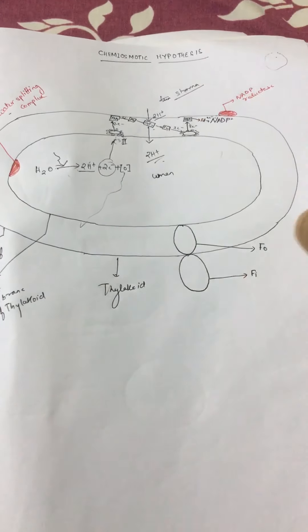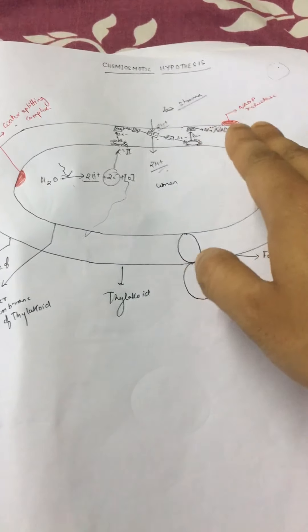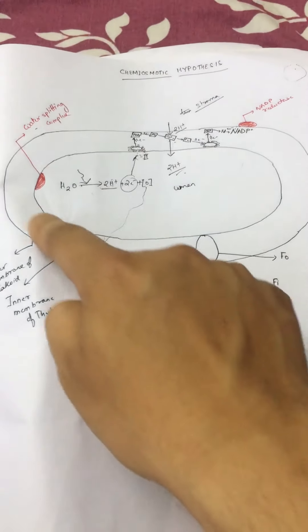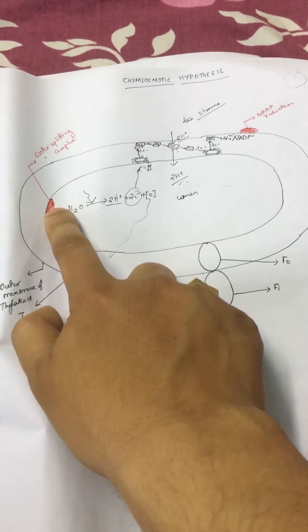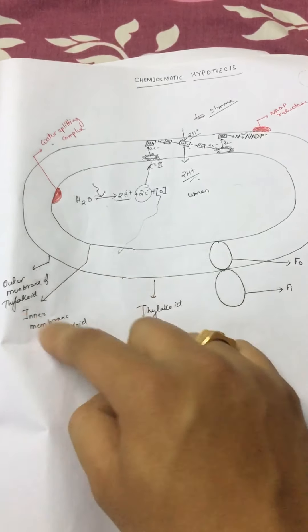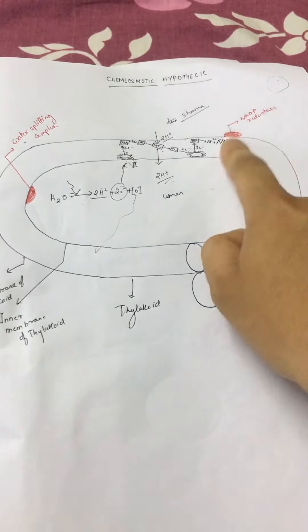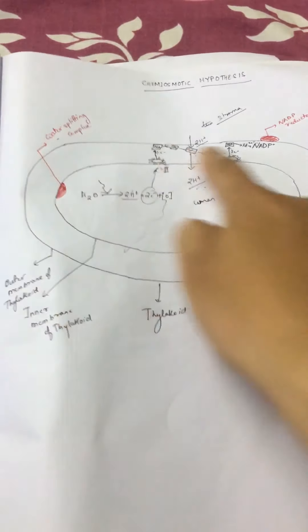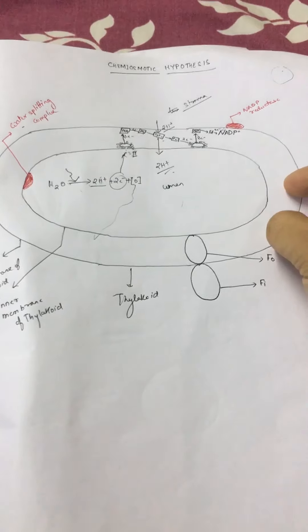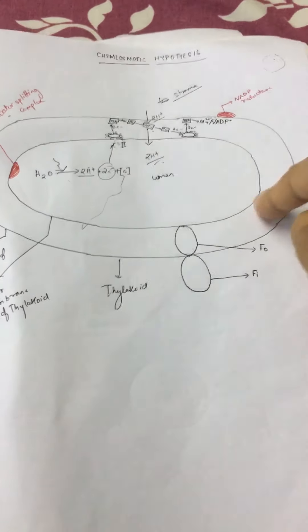The light reaction has two phases: cyclic photophosphorylation and non-cyclic photophosphorylation. Both take place above the thylakoid, where the pigments are present. The thylakoid has two membranes — the inner membrane contains the water splitting complex, and the outer membrane has a complex called NADP reductase. The inner portion of the thylakoid is called the lumen.